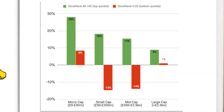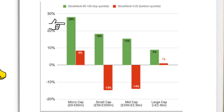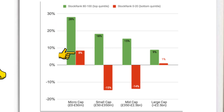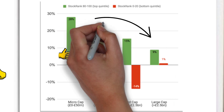Finally, we have market capitalization. Using the same stock rank scores based on the QVM factors, we can see that stocks which are considered micro caps saw an average annual return of 28%. Interestingly, and perhaps the only anomaly we have seen up to now, is that even the lowest ranked stocks managed positive annual returns of 8%. The results for each market cap group thereafter speak for themselves.